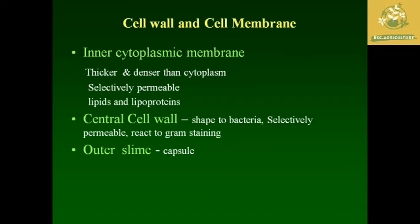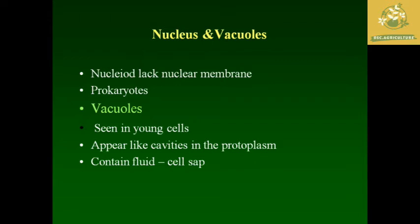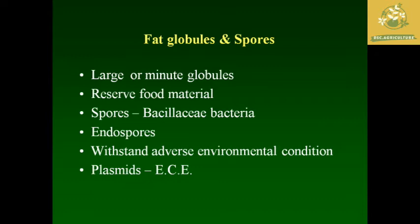The outer slime, also known as the capsule, is a protective agent in the cell membranes. The nucleus in bacteria lacks a nuclear membrane and is prokaryotic in nature. Vacuoles are seen in young cells and appear like cavities in the protoplasm, containing cell sap. Fat globules and spores, which are large or minor globules, are known as the reservoir of food material. Spores are found in Bacillus bacteria; endospores are present under adverse environmental conditions. The destruction of such spores is critical for most of these species. Plasmids are also known as extrachromosomal elements.